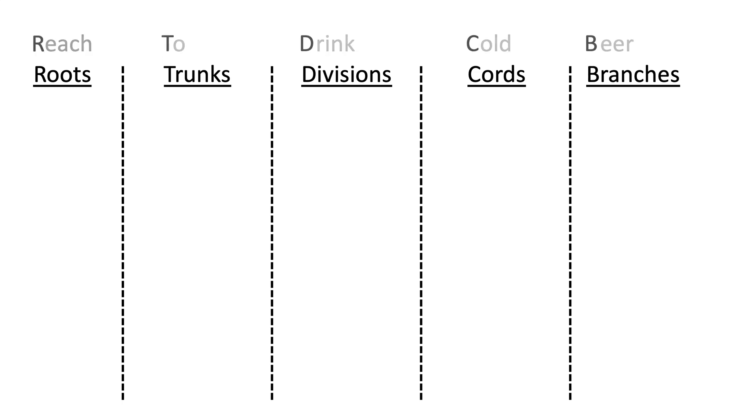We'll label the top of each section using the terminology for the brachial plexus: roots, trunks, divisions, cords, and branches. We can remember that sequence using the mnemonic reach to drink cold beer.